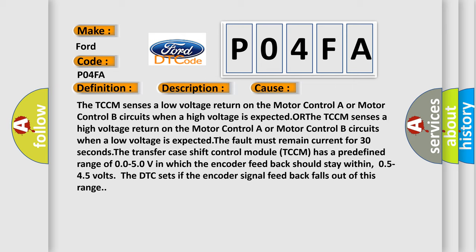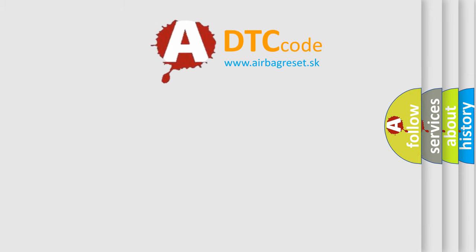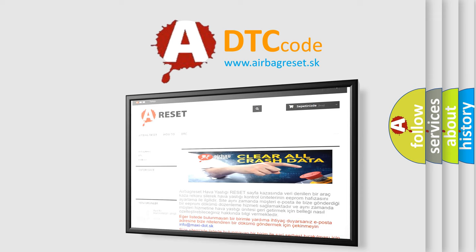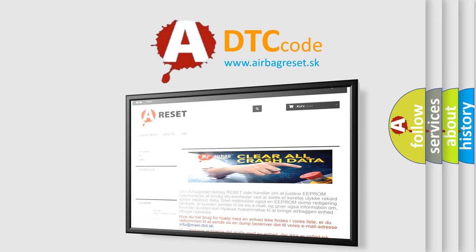The transfer case shift control module TCCM has a predefined range of 0.050V in which the encoder feedback should stay within. The DTC sets if the encoder signal feedback falls out of this range. The airbag reset website aims to provide information in 52 languages. Thank you for your attention and stay tuned for the next video.